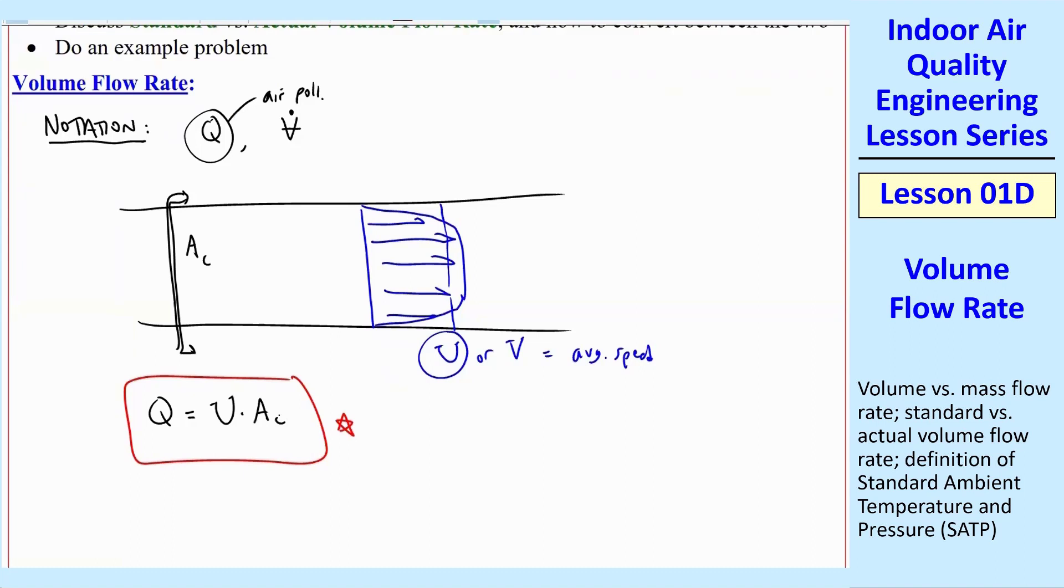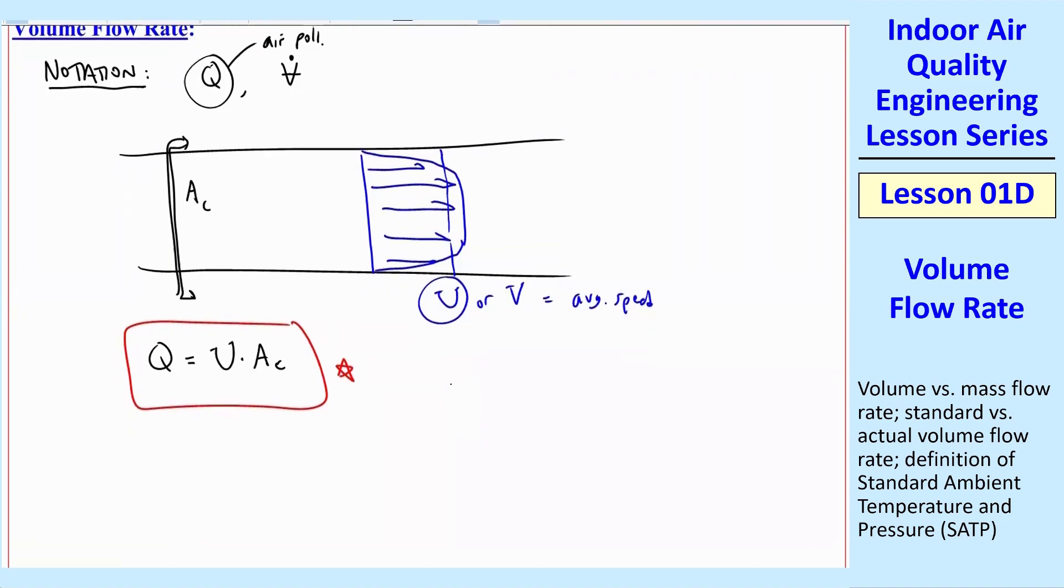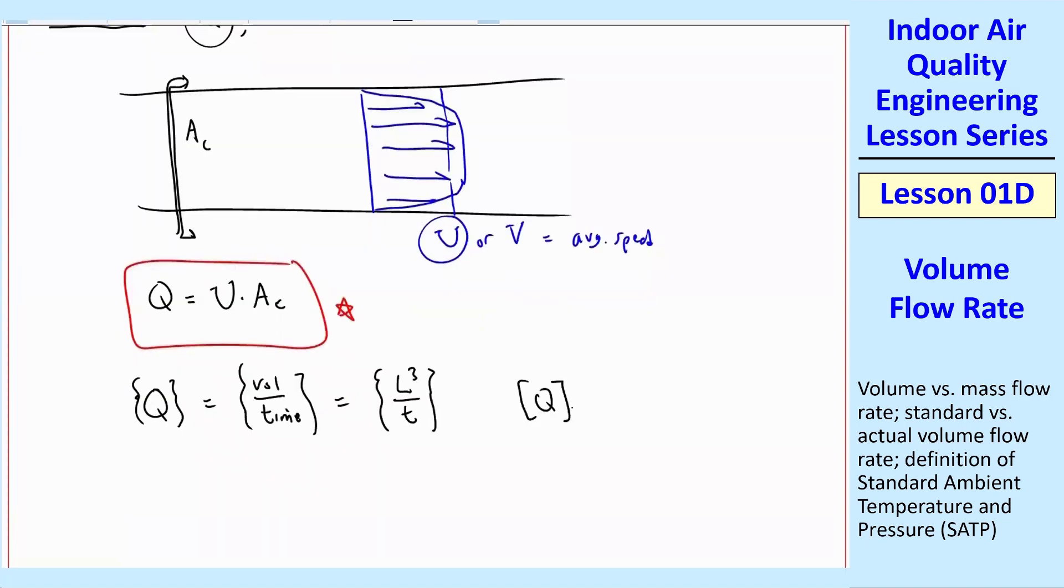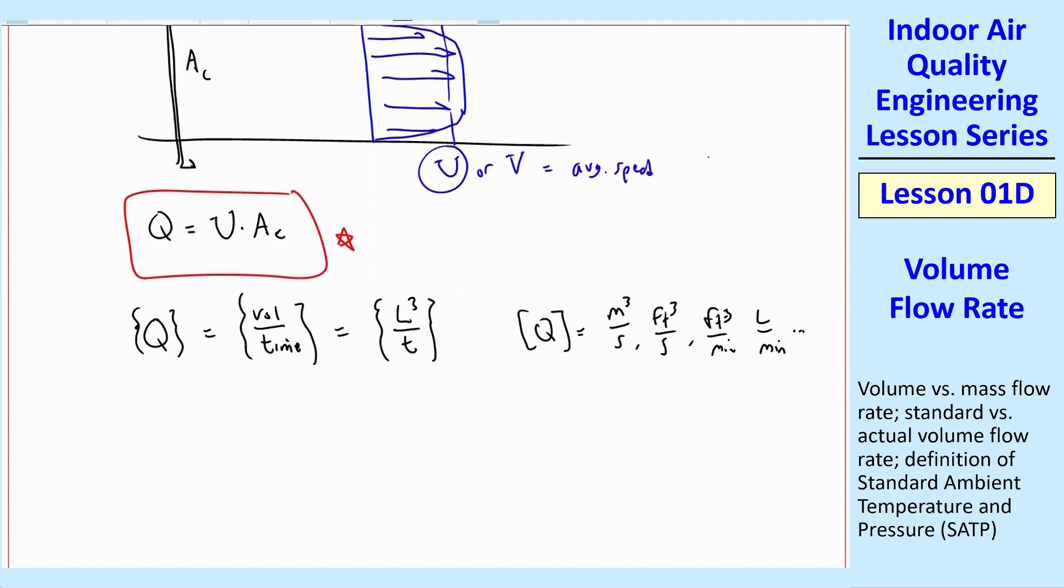This is just a review from your fluid mechanics class. As I always like to do, the dimensions of Q are volume per time, and in terms of primary dimensions, L cubed over T. And then the units of Q can be many different things, meter cubed per second, cubic feet per second, cubic feet per minute, liter per minute, etc. So you take your choice of all those different units.